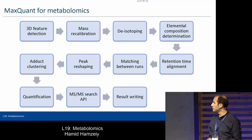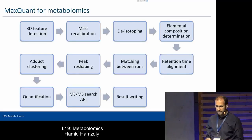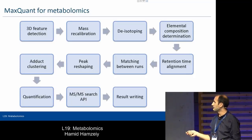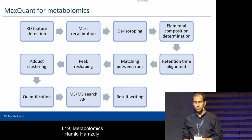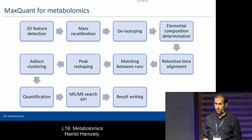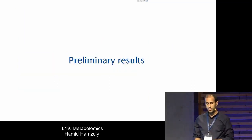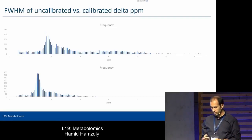This is an overview of the steps that MaxQuant for metabolomics will have. We are slowly working to implement every single step. As you can see, some of them come directly from proteomics and some will be tailor-made for the metabolomics work. The most important thing is the library and mass morphing, and here I have some preliminary results for that.